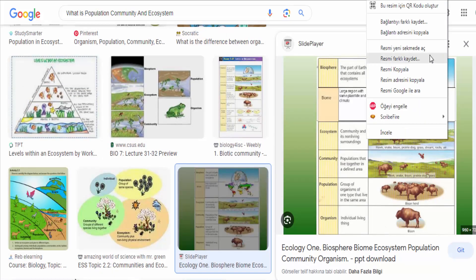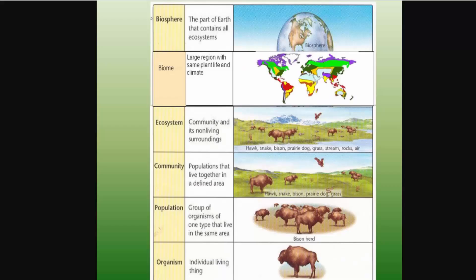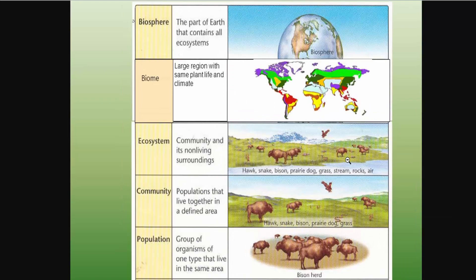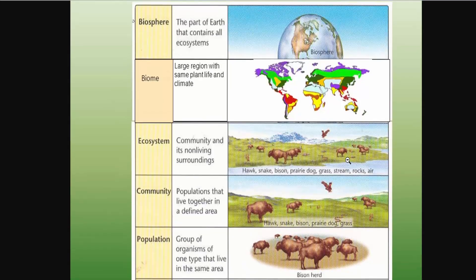Population ecology focuses on studying factors that influence population growth, dynamics, and interactions, including birth and death rates, immigration and emigration, and resource availability.